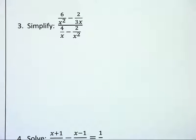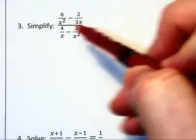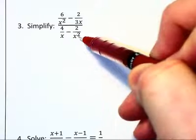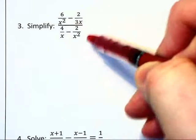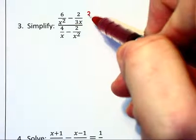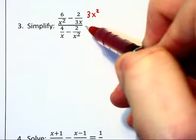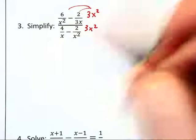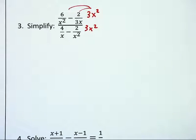We will simplify this complex fraction by multiplying in each of the four corners by the least common denominator that we find among the four mini-denominators. That will be 3x squared. So we're multiplying by 3x squared over 3x squared and really distributing that through to each of the four fractions.